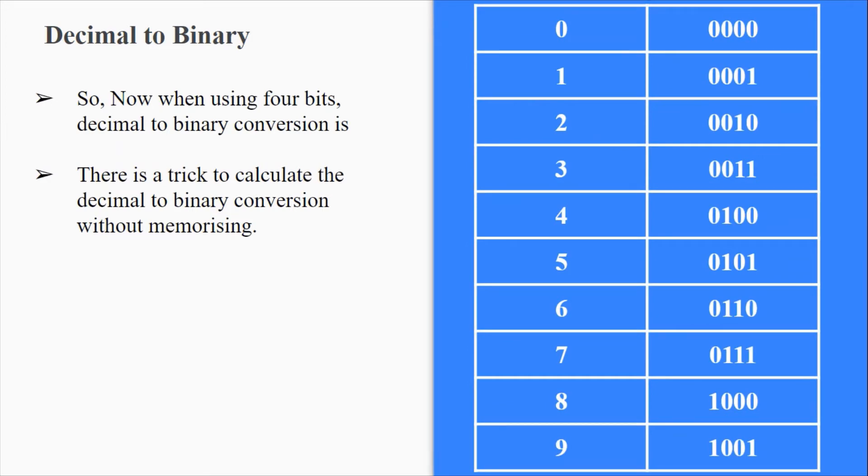0 is 0000, 1 is represented as 0001, 2 as 0010, 3 as 0011, 4 as 0100, 5 as 0101, 6 as 0110, 7 as 0111, 8 as 1000, and 9 as 1001.